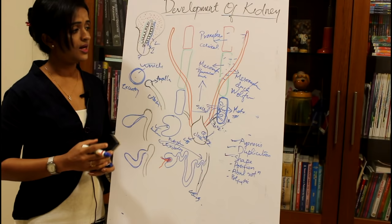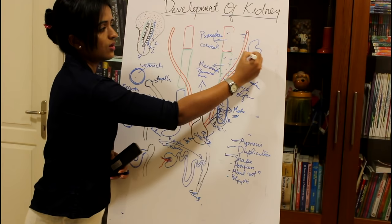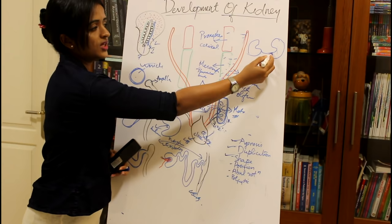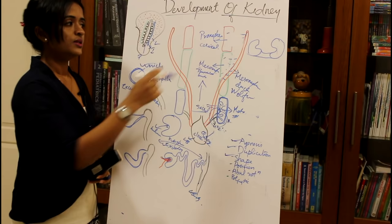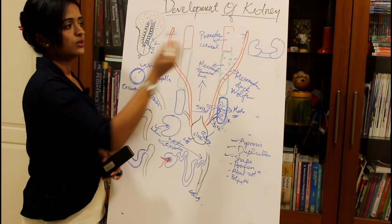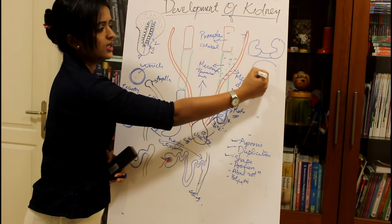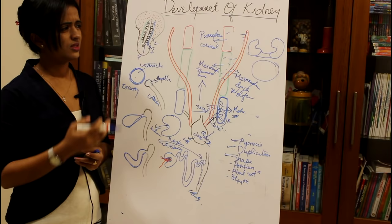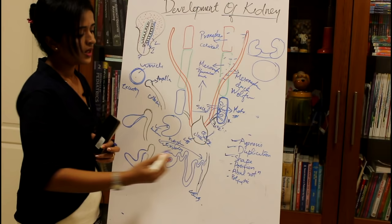As for anomalies of kidney shape: sometimes the lower poles of both kidneys fuse together, giving a horseshoe appearance — this is horseshoe kidney, which usually happens at the lower pole but can also occur at the upper pole. Sometimes both kidneys come together like a pancake, called pancake kidney.